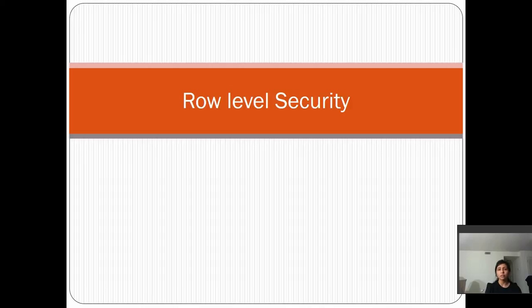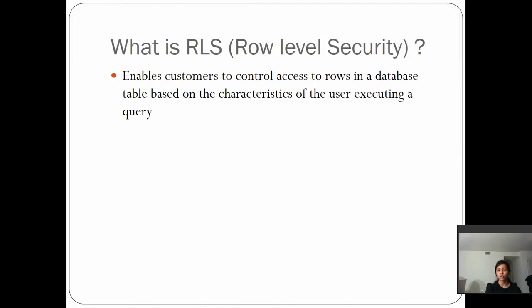It's a very common scenario for a DBA to grant or deny access to a table or object in SQL Server. But what if you want to give access to a user to read only a few records instead of the entire table? In that case you use Row Level Security, or RLS.